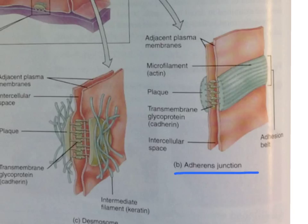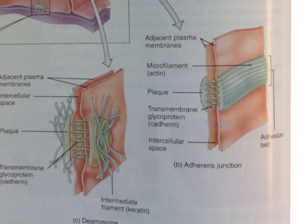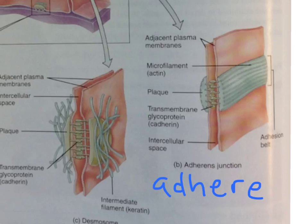Adherence junctions are composed of condensed protein bands called plaques. These attach the adjacent cell membranes to membrane proteins and the cytoskeleton within the cell. The root word of adherence is adhere, which means to stick together. Adherence junctions also contain microfilaments, which extend along the length of the plaque. Also within the plaque are a type of transmembrane glycoprotein called cadherins, and these connect the cells to each other.